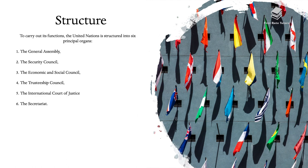To carry out its functions, the United Nations is structured into six principal organs: the General Assembly, the Security Council, the Economic and Social Council, the Trusteeship Council, the International Court of Justice, and the Secretariat.